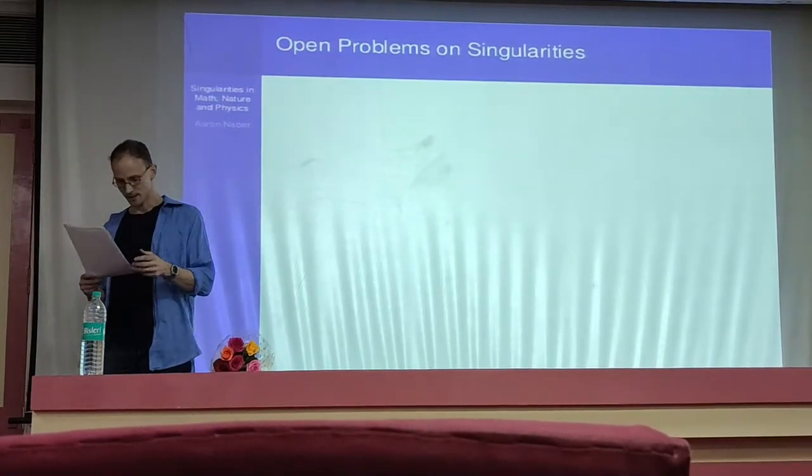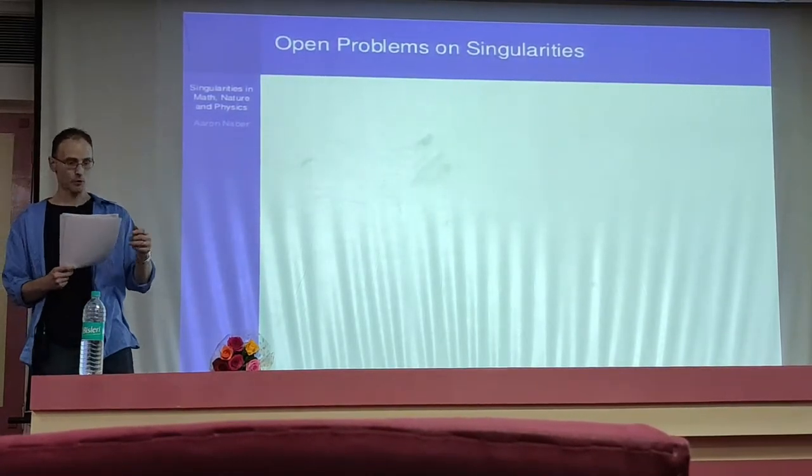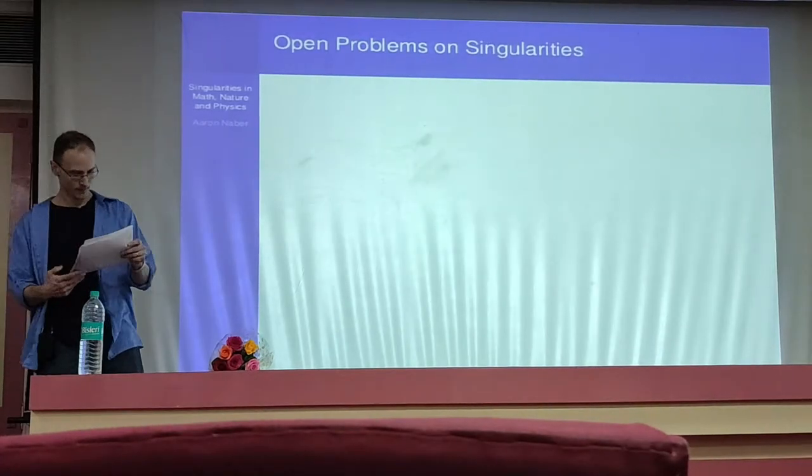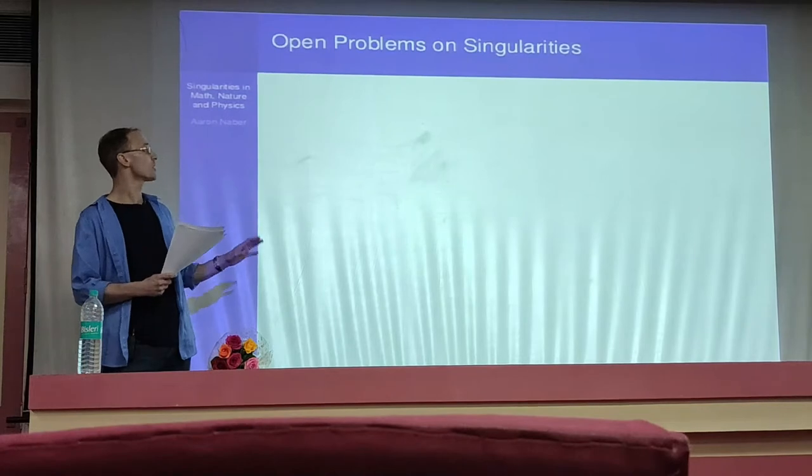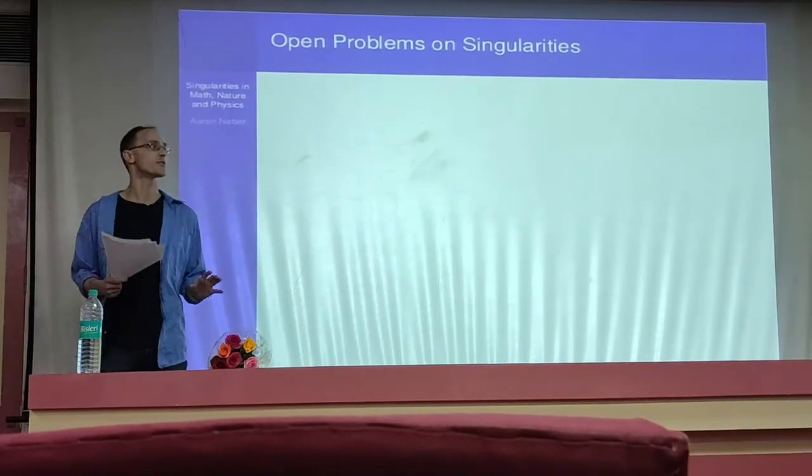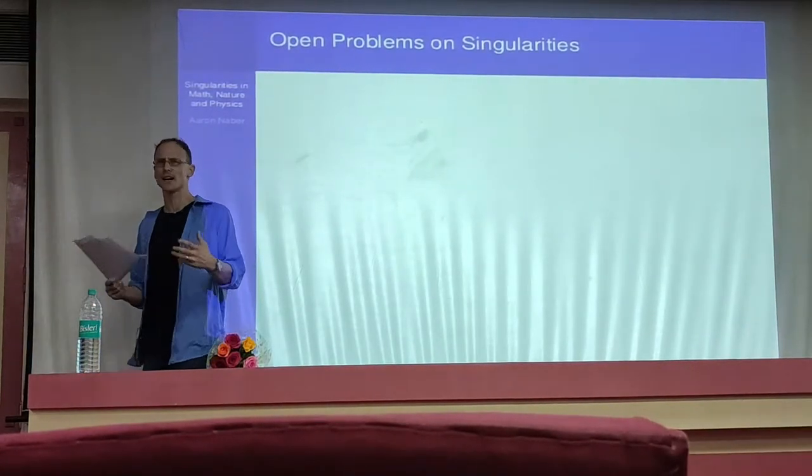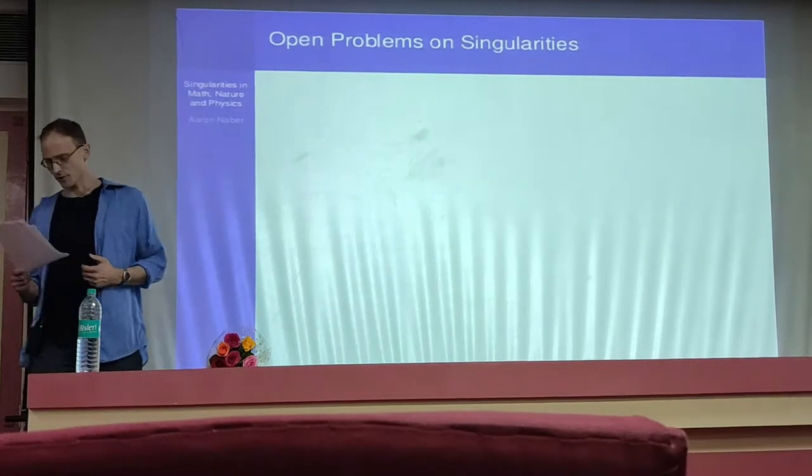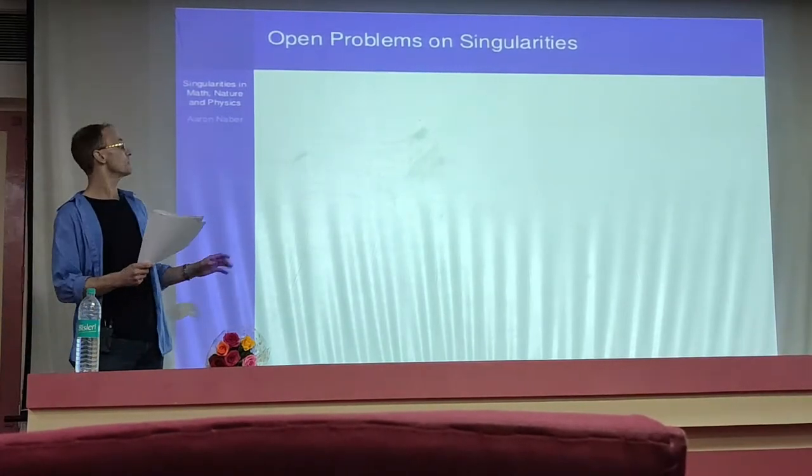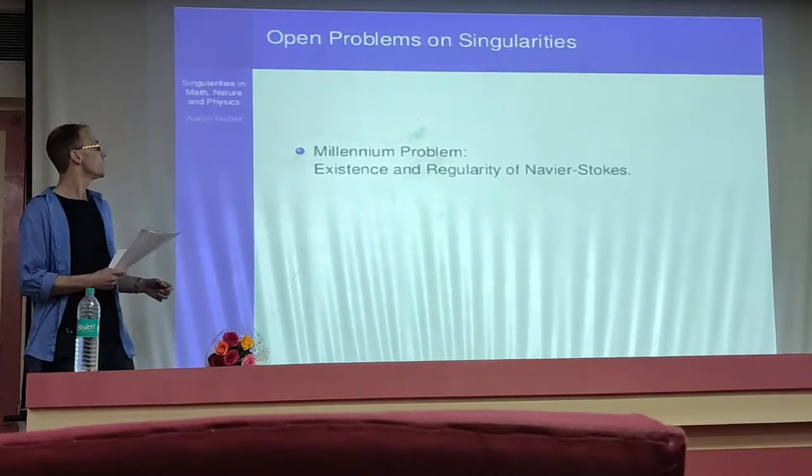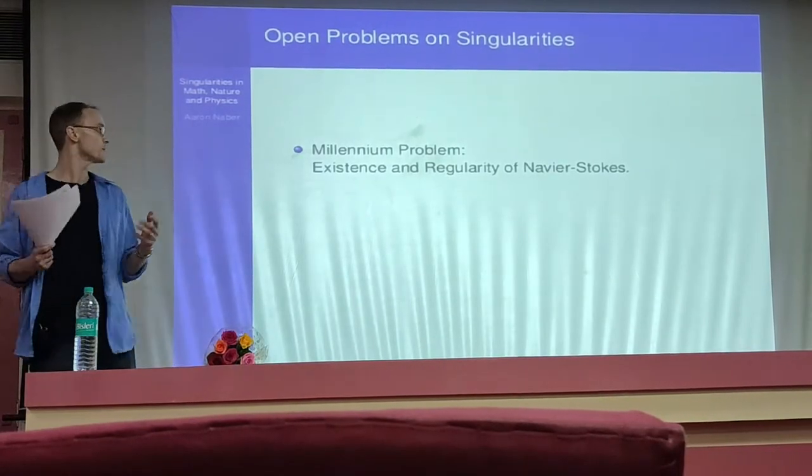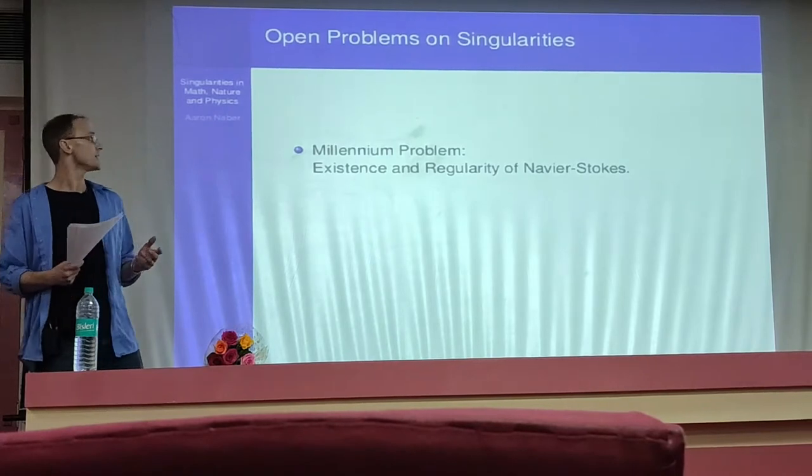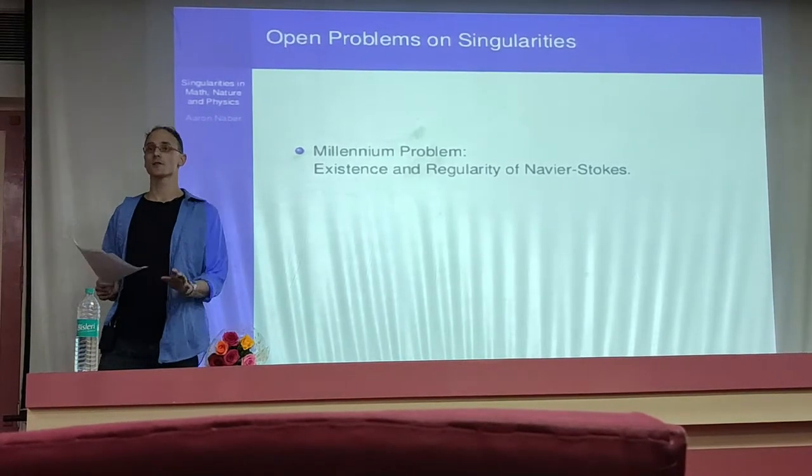Let me list a couple of open problems. There are a lot actually. I would say a good chunk of problems from math, a good percentage of them are about singular things in one guise or another. The first one I'll talk about is a millennium problem. This is one of these 70 million rupee questions. It's about the existence of singularities. It's called Navier-Stokes.